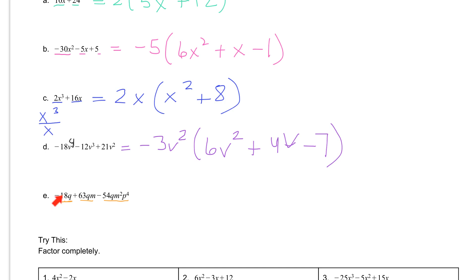So we're going to take a look. We have negative 18, we have 63, and negative 54. Our leading coefficient here is negative, so we're going to take a negative out. And 18, 63, and 54 — the biggest number they're all divisible by — is 9. So we're going to take out a negative 9. Then we look at each variable separately. The first variable is q: we have a q in all three terms, which means we can take a q out.